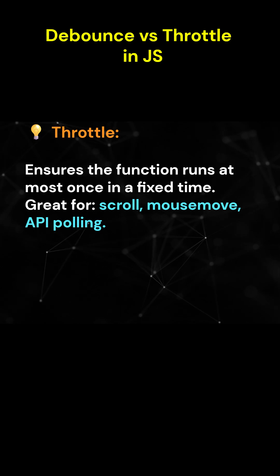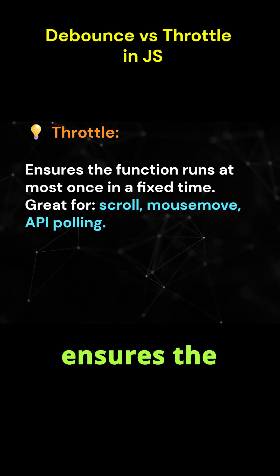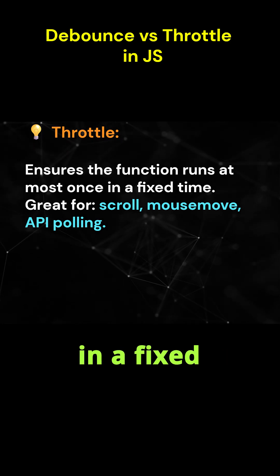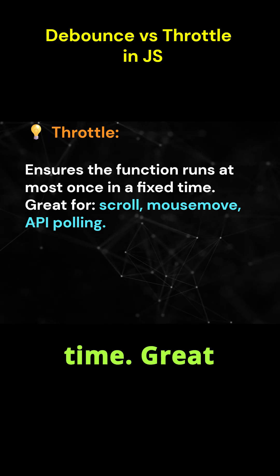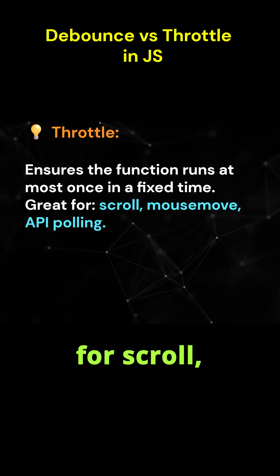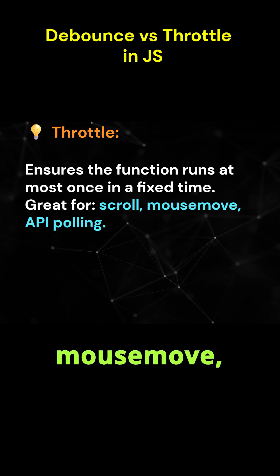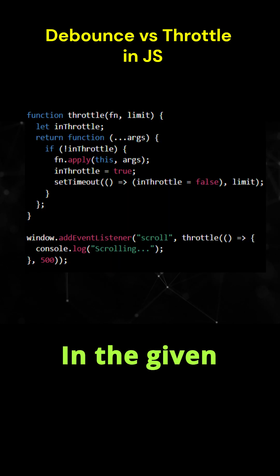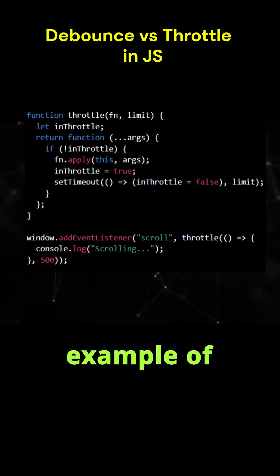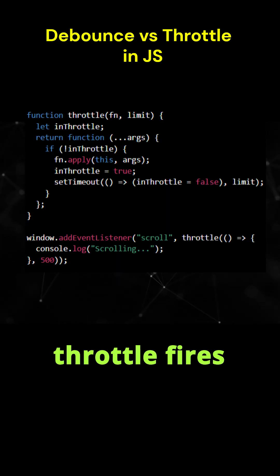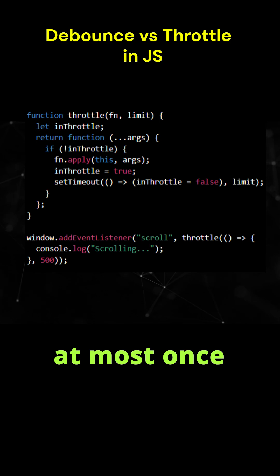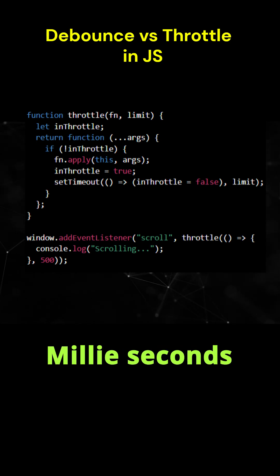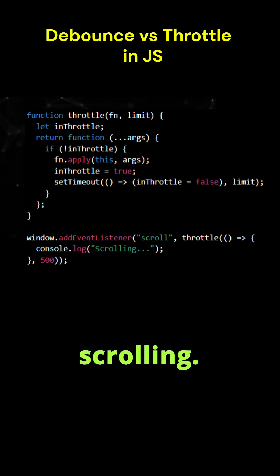Throttle ensures the function runs at most once in a fixed time. Great for scroll, mouse move, and API polling. In the given example of throttle, it fires at most once every 500 milliseconds during scrolling.